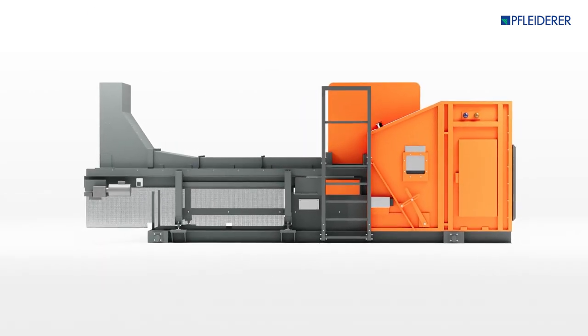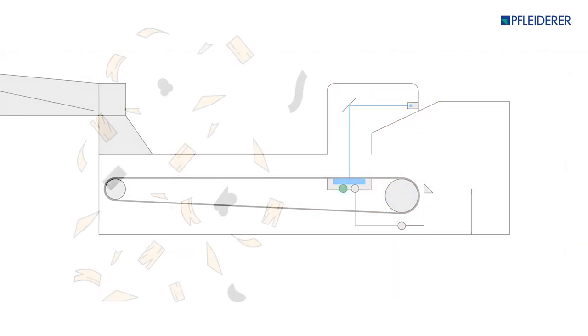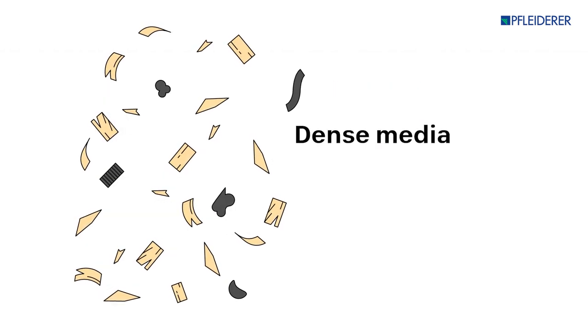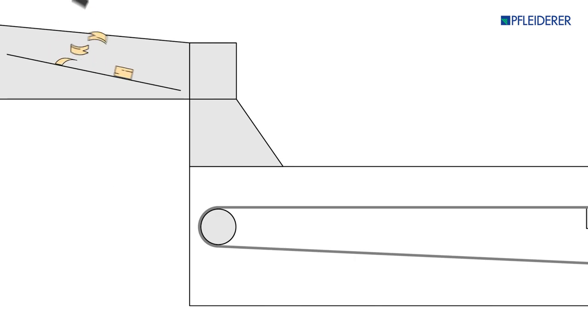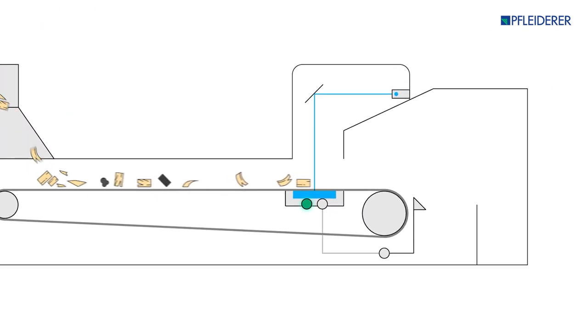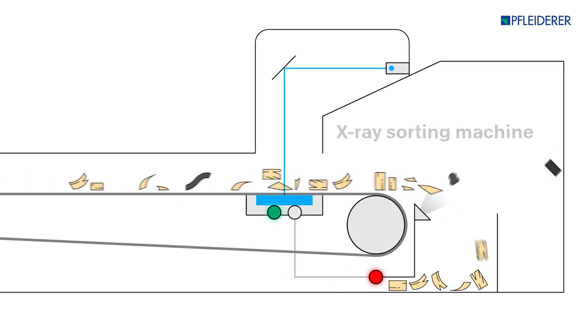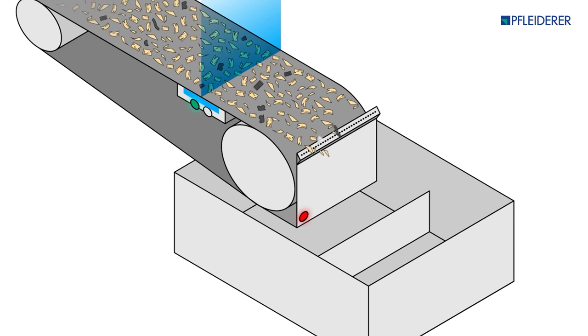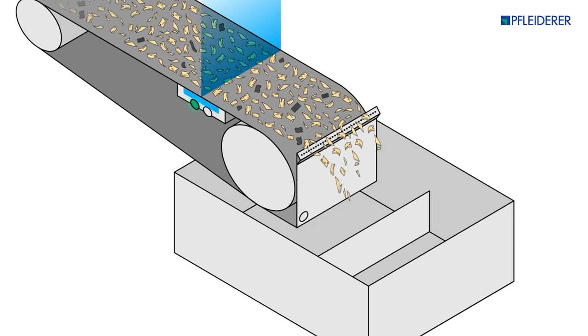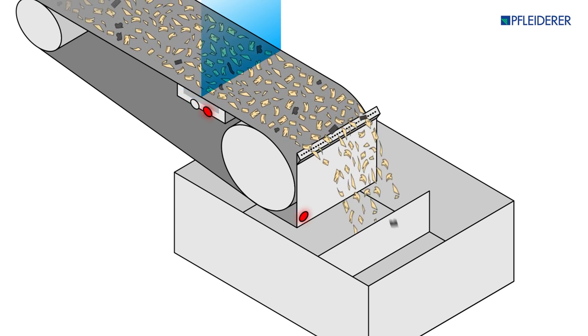Dense contaminants that have so far not been recognized are removed in the next step. This is achieved with the aid of an X-ray sorting machine that continuously analyzes the material flow in its entirety. When the system identifies a contaminant, it is ejected from the material flow by a precise jet of air.